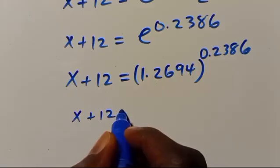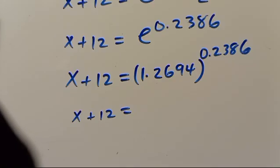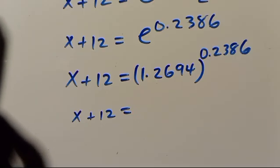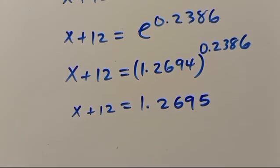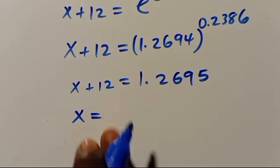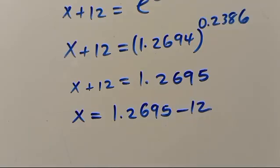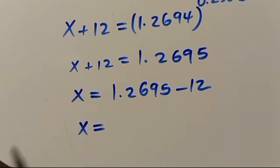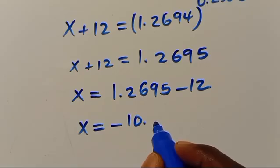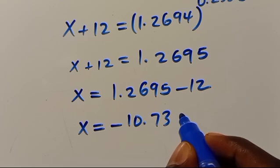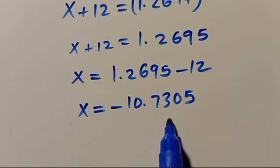So we have x + 12 equals e to the power of 0.2386. The value of e to the power of 0.2386 is 1.2695. Therefore x + 12 equals 1.2695, and when we subtract 12 we have x equals 1.2695 minus 12, which gives us x equals minus 10.7305.